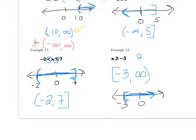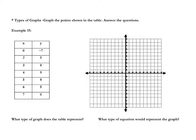From here on out, we will write domain and range in interval notation. The next problem says: type the graph, then graph the points in the table and answer the following questions. Notice they didn't give me the equation — they just gave a set of table values. Let's go ahead and draw these in.